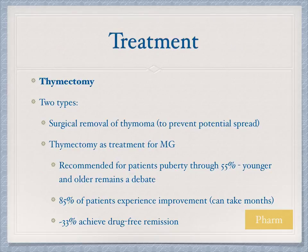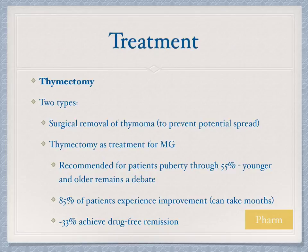A thymectomy is a surgical option to consider in myasthenia gravis. There are two surgical approaches involving the thymus: removal of a thymoma to prevent its spread, or a full thymectomy, which is the more typical surgical treatment for myasthenia gravis. Thymectomy is recommended for patients from puberty through age 55; for patients younger or older than that, the data remains mixed and conflicting.